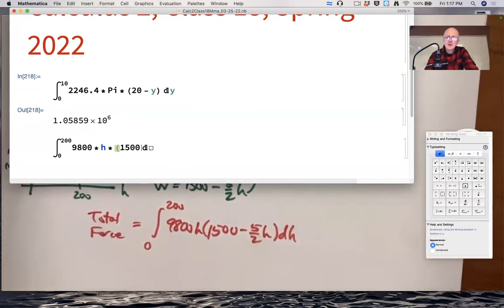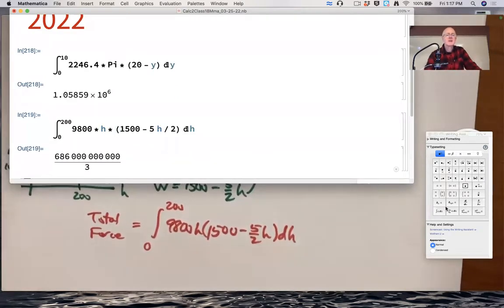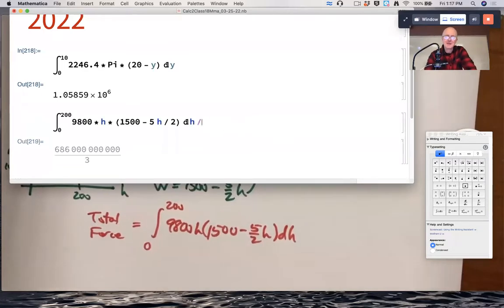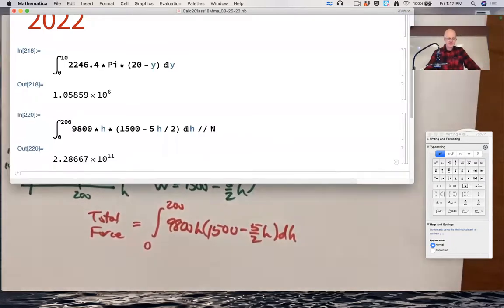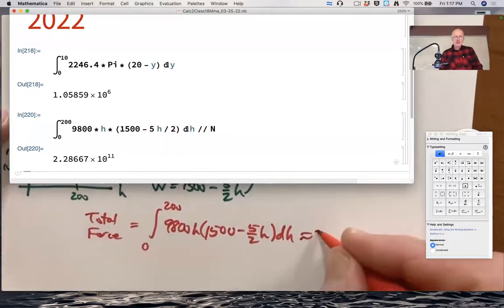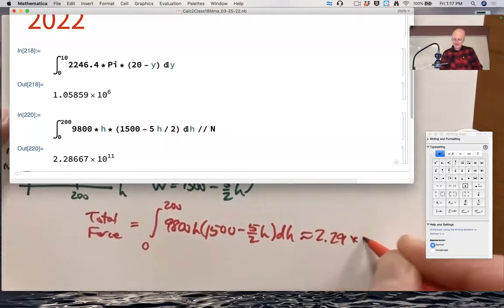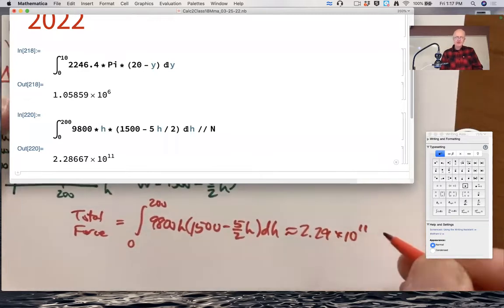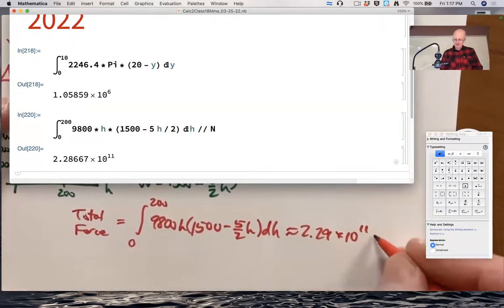686 billion over 3. What is that approximately? Still over a billion, of course. About 2.29 times 10 to the 11th. We are in SI units. This would be in Newtons.